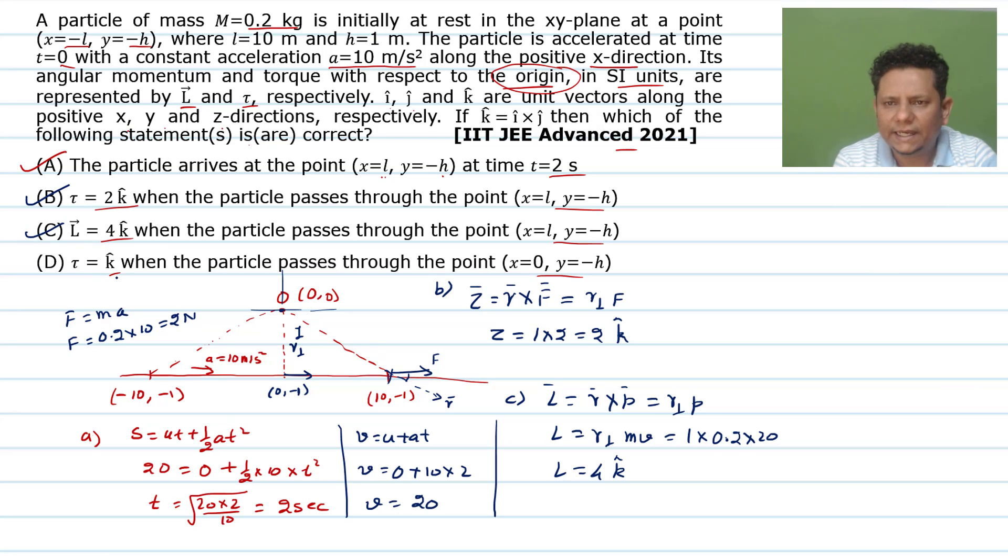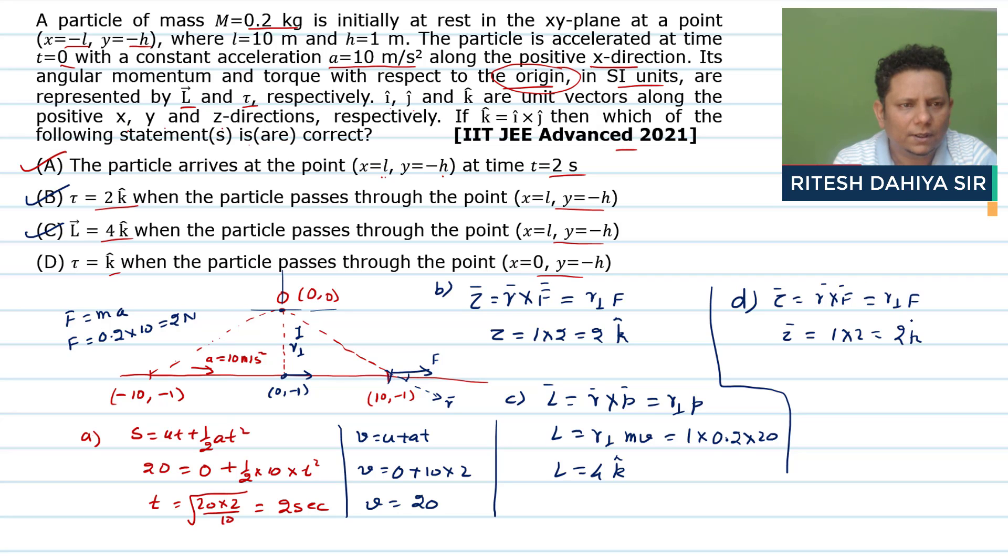Now torque = k cap when particle passes through point (x=0, y=-h). At this location, torque value will be k cap. Now we'll evaluate this for option D. Torque = r cross F, which equals r perpendicular times F. Again, torque vector: r perpendicular is 1, and F value hasn't changed during this time. Force is constant, so its value will be multiplied by 2, which equals 2k cap. So option D is not correct. This means your correct options are A, B, and C.